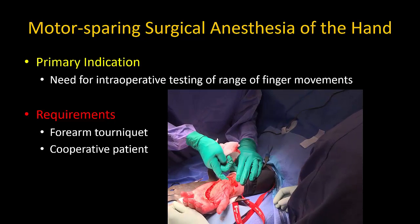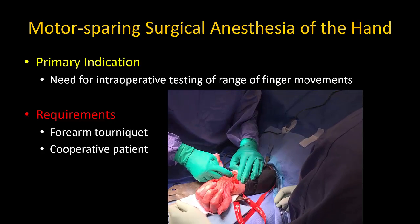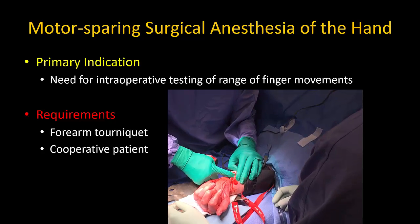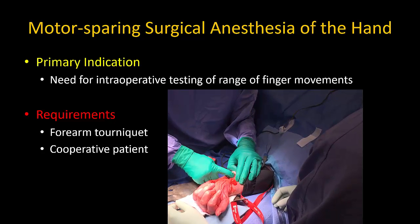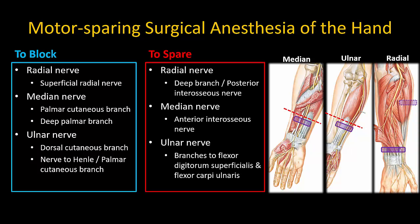This technique obviously also requires a cooperative patient who is willing to forego sedation. To achieve the necessary operating conditions, the nerves that must be blocked are the superficial radial nerve, the median nerve, and the ulnar nerve, while at the same time making sure to avoid blocking the branches that supply the flexor and extensor muscles of the forearm.